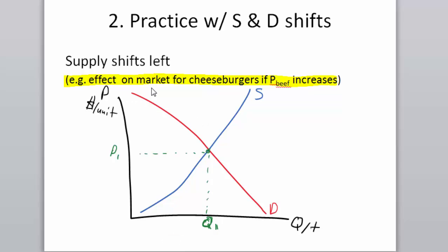The effect on the market for cheeseburgers if the price of beef increases. Now I've already told you this is a leftward supply shift. Let's go ahead and draw that in. Move the supply curve to the left enough to where it's really noticeable and we can clearly analyze what's happening. We'll call that supply 2.